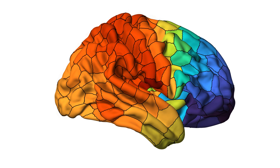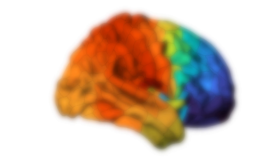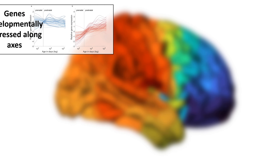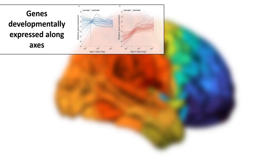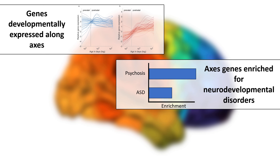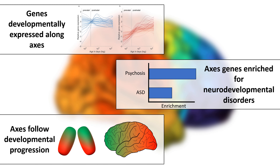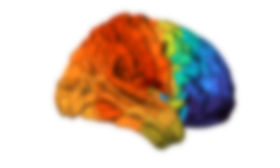Previous findings showing gradient organisation in the thalamus have also suggested that thalamocortical connectivity develops along these gradients. Firstly, genes expressed along the thalamic axis show differential expression across development. Secondly, these same genes are associated with neurodevelopmental conditions. And thirdly, the orientation of these axes corresponds to known developmental patterns. So then, we would expect thalamocortical connectivity to develop along thalamic axes.